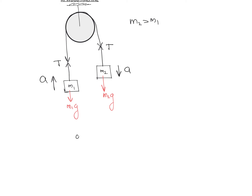Now we draw the free body diagram for mass m1. The weight m1g acts in the downward direction and tension T acts in the upward direction, and m1 is moving with acceleration a in the upward direction. This means the tension is greater than m1g. Taking upward as positive, we write: T minus m1g equals m1 times a. This is equation one.